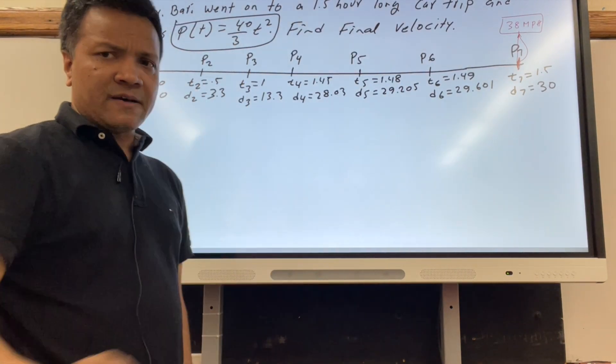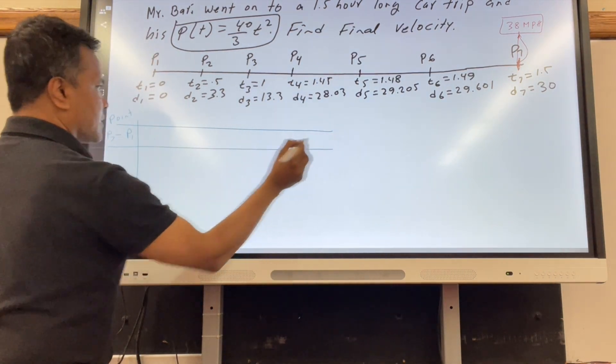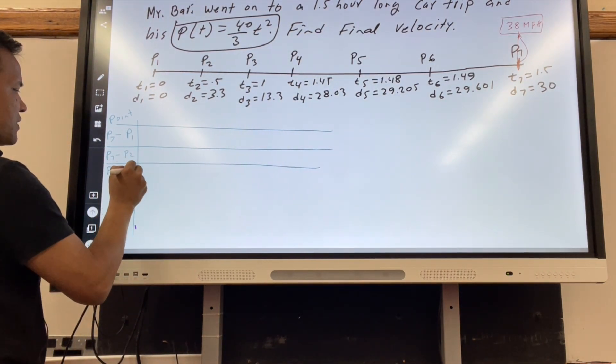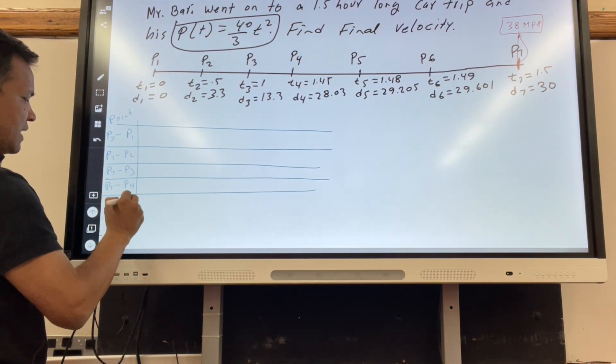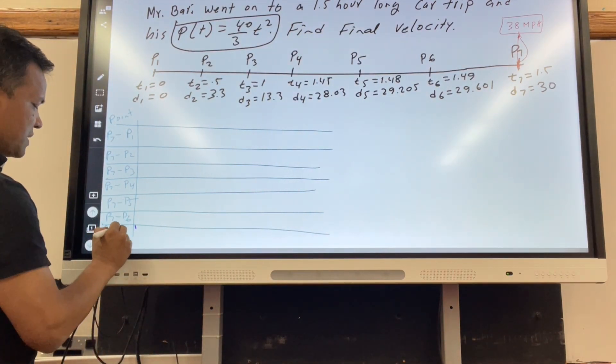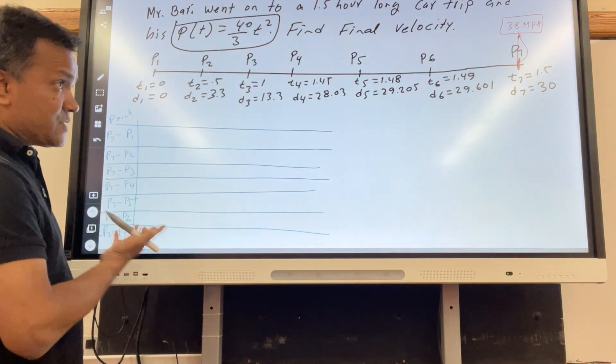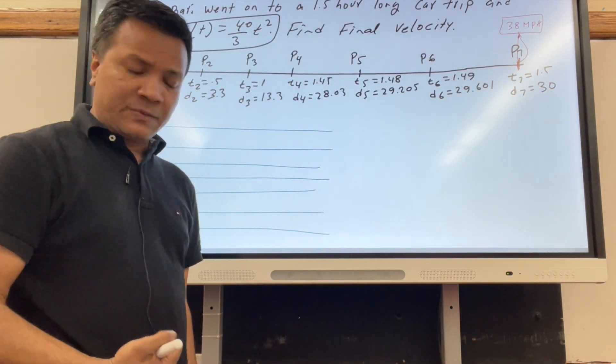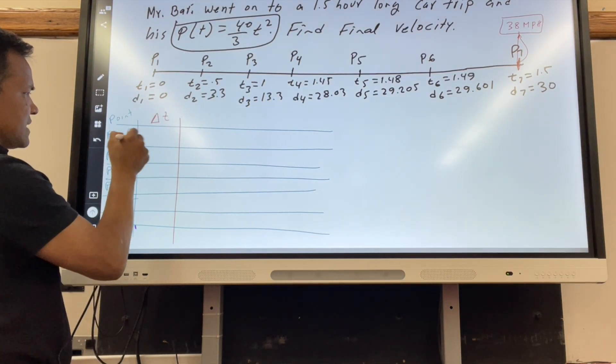What would be the velocity at p7? We need p7 to p1, p7 to p2, p7 to p3, p7 to p4, p7 to p5, p7 to p6, and p7 to p7. P7 to p7 does not exist - it is undefined because it's 30 minus 30 over 1.5 minus 1.5, which is 0 over 0. Algebra breaks down here. The delta t between these two...